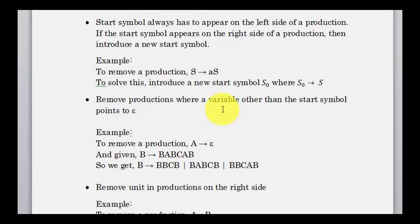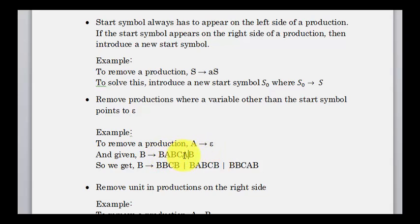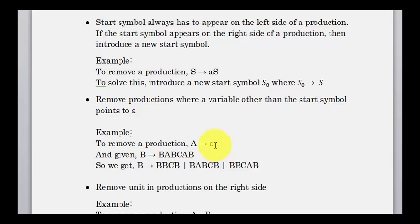Remove productions where a variable other than the start symbol points to epsilon. If a variable points to epsilon and it's not the start symbol, you must remove that production. For example, if A goes to epsilon and A appears in B goes to BACB, we replace each occurrence of A with epsilon, generating all combinations: with and without each A. This gives us the new rules, and A goes to epsilon is successfully removed.